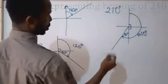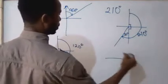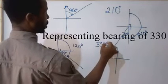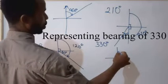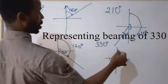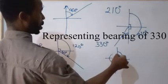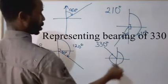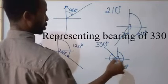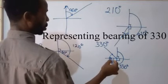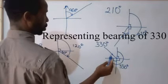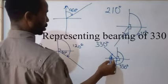If I have angle 330, I move from the north: 90, 180, 270. If I get to the north again it's 360. So somewhere here — the whole of this angle is 330 degrees. That's 90, another 90, another 90 — making 270. What angle do I have more to make 330? That's 60 degrees.